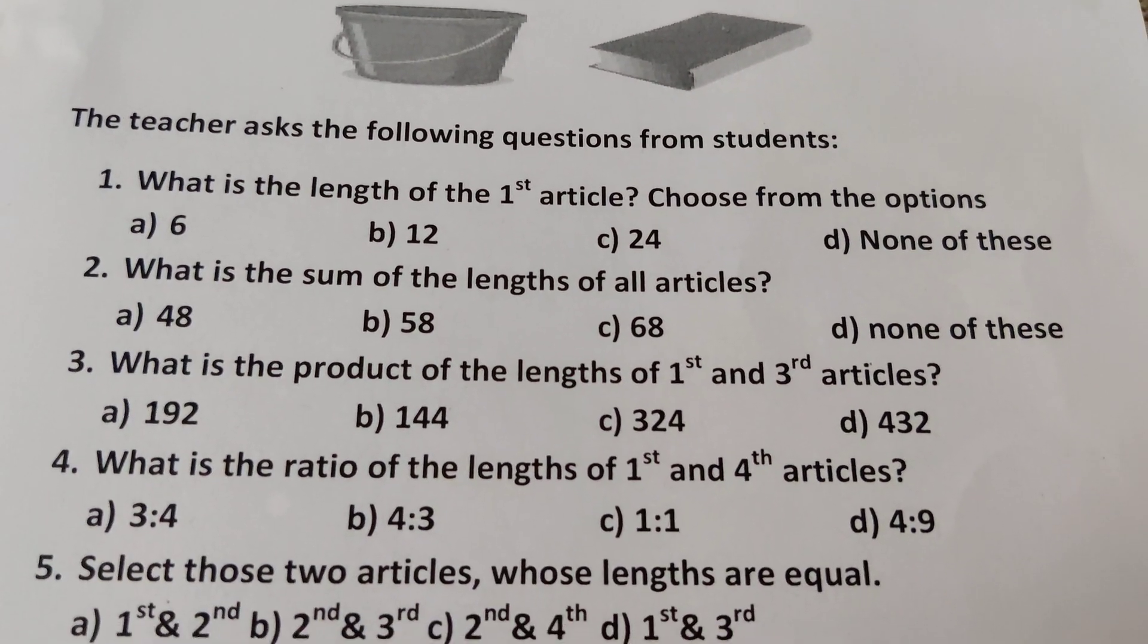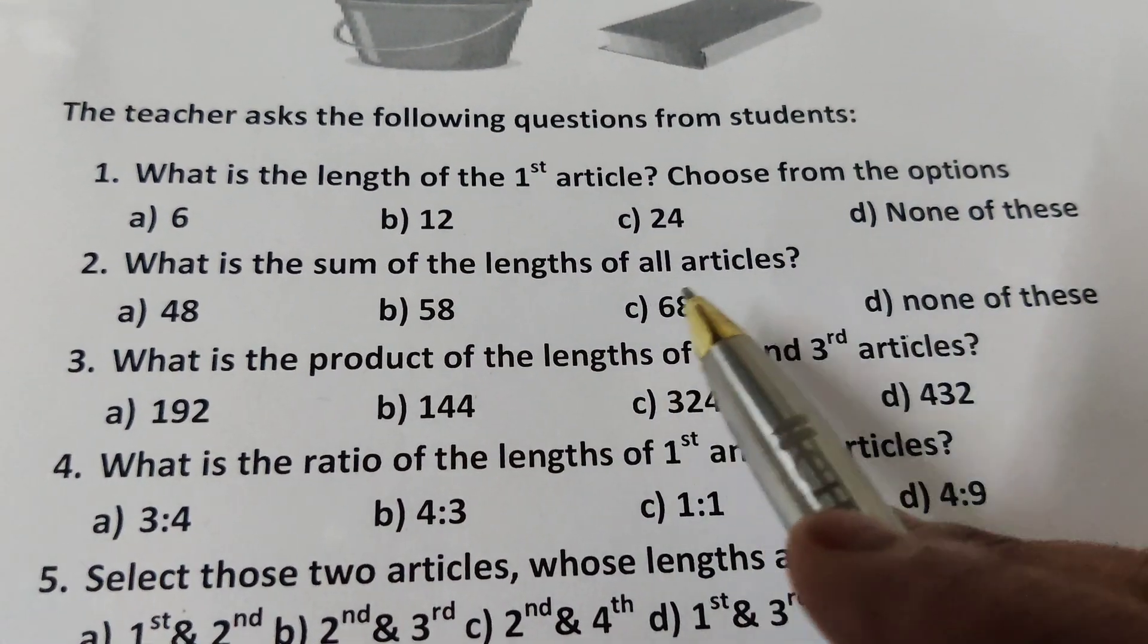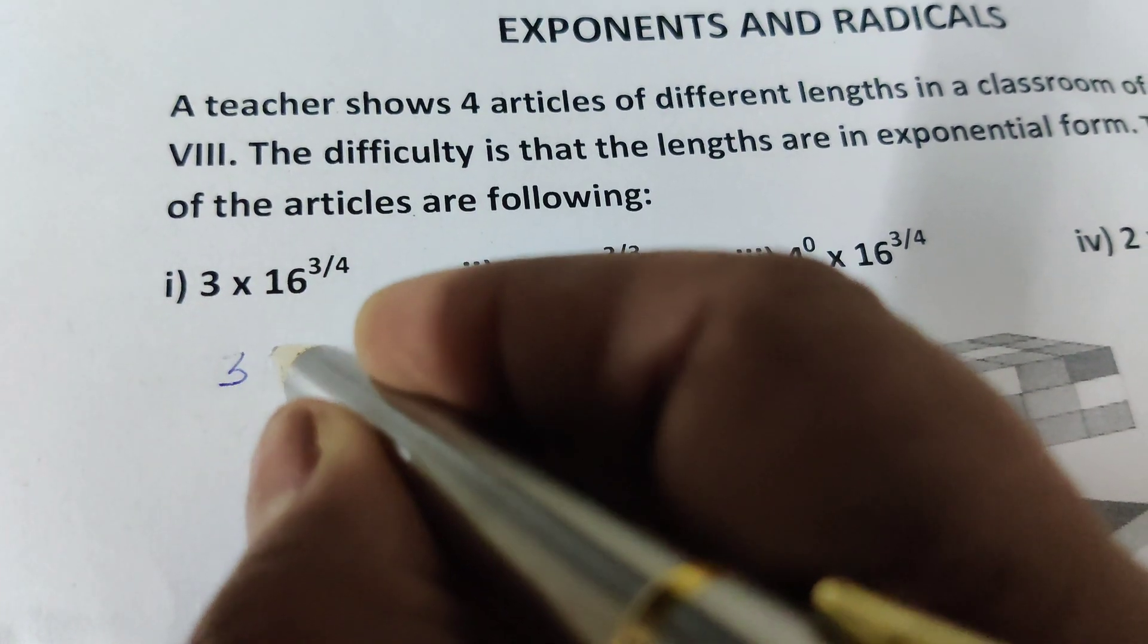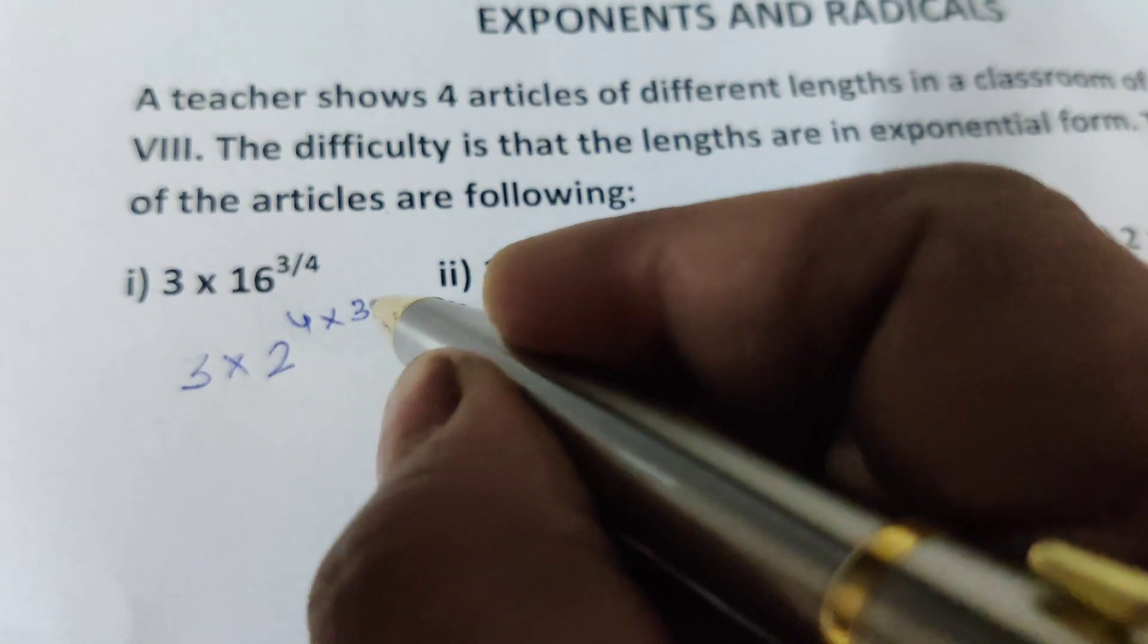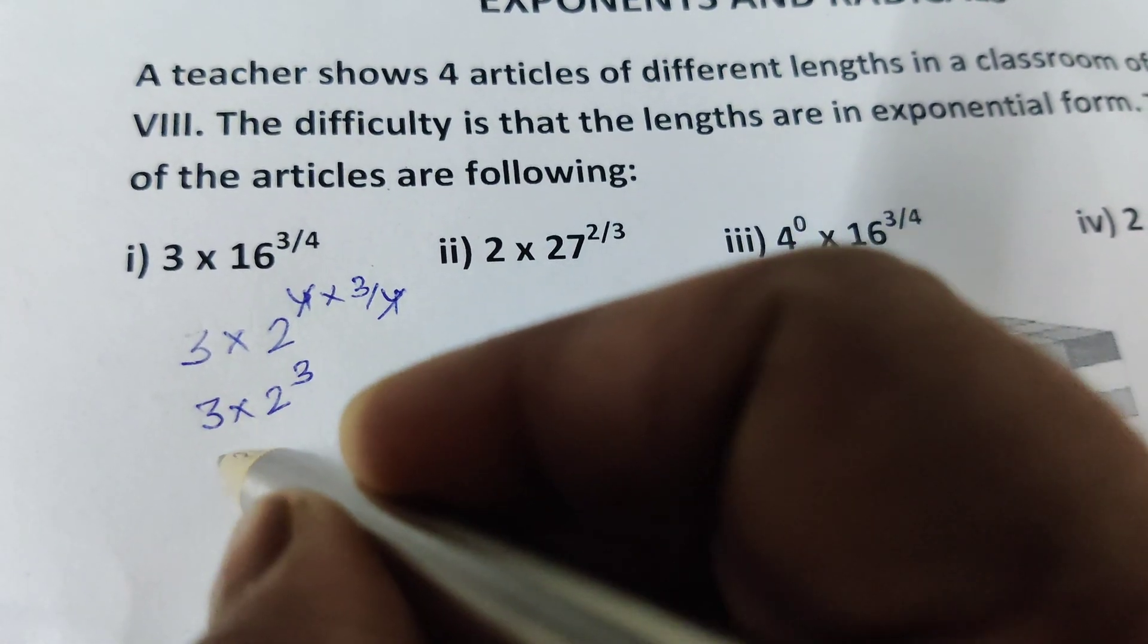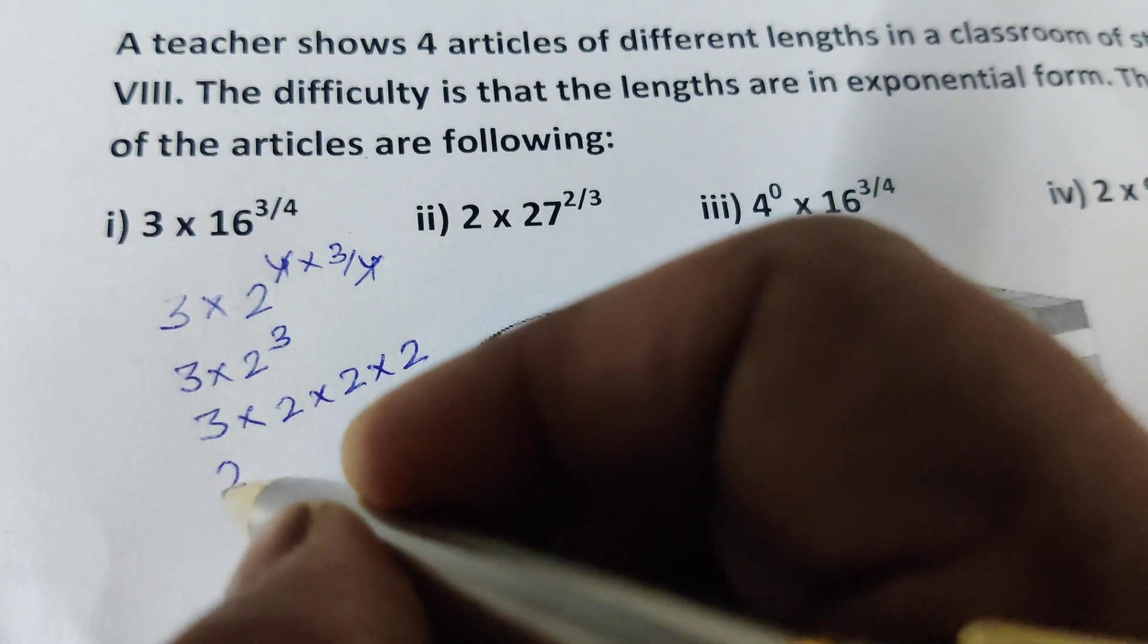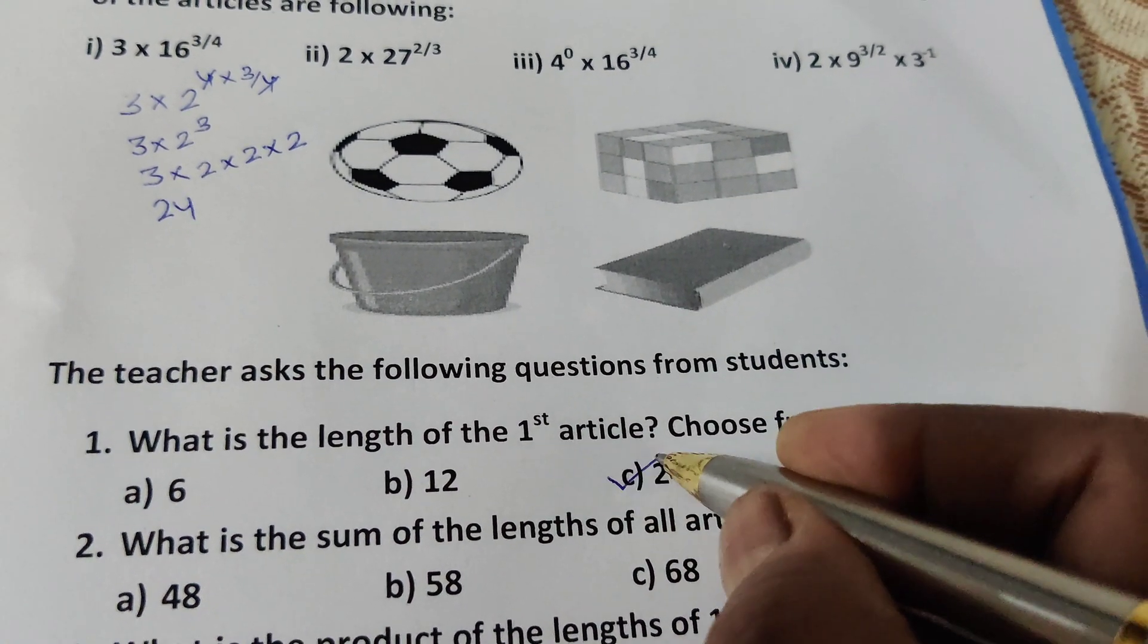Question 1: What is the length of first article? Choose from the options. The first article is 3 × 16^(3/4). Now you can solve: 3 × 16, we can write 16 as 2^4, the power is 3/4, 4 cancels. 3 × 2^3, 2^3 is 8, which is 2 × 2 × 2, which equals 8. 8 × 3 = 24. The length of the first article is 24. Options: 6, 12, 24, none of these. Right answer is 24.